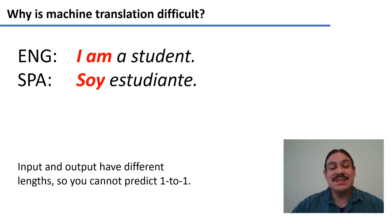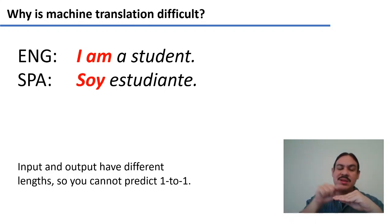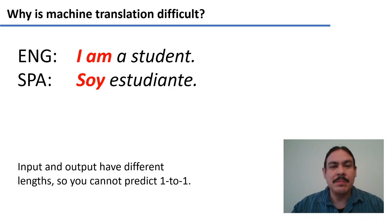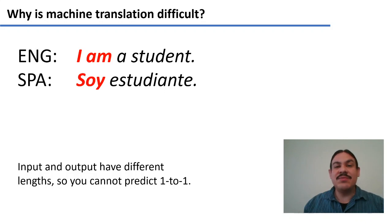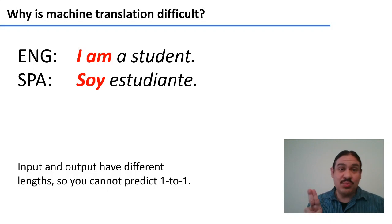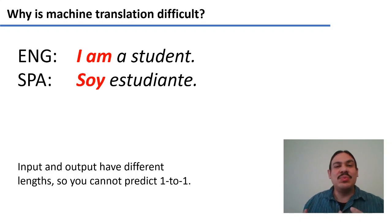Pretty soon you'd run into a problem — and not just that the table would be really large. The main problem is that the input and the output don't really match. The input and the output are not one-to-one in their relationship. For example, in English we have two tokens for 'I am,' and these are just one token in Spanish: 'soy.' Same for 'a student,' which is two tokens in English, but 'estudiante' is one token in Spanish. So we have four tokens in the English input and two in the Spanish output.